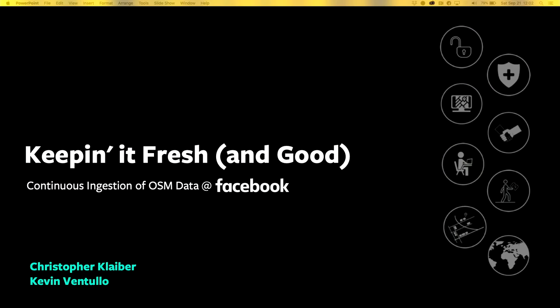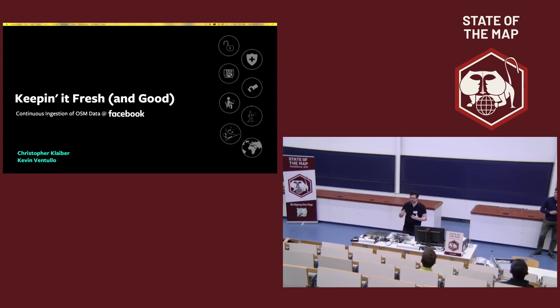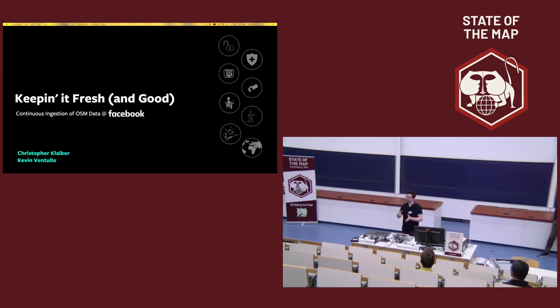I'm Christopher and Kevin. Today we're going to cover some of our adventures in using OSM data at Facebook. Maintaining quality in a database with millions and millions of features is difficult, and OSM is a giant database with millions of features and thousands of mappers. Ensuring data quality has been a challenge throughout the history of the project. At Facebook, we've been thinking about how to maintain quality and improve it by ensuring that only good data gets onto the map.